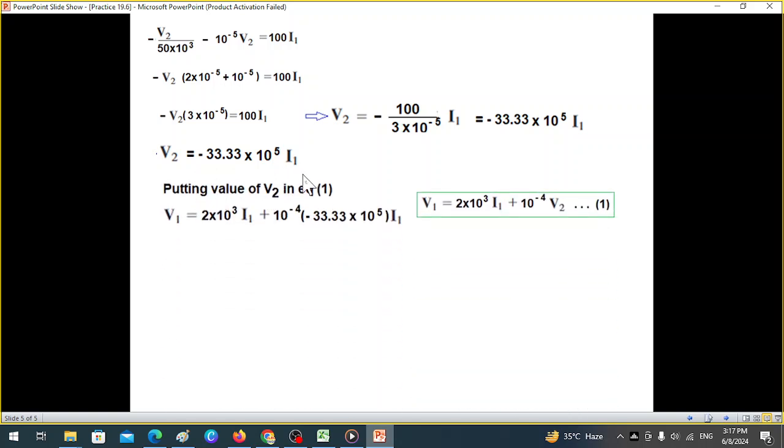Now we will plug in this value of V2 in equation number 1. If you plug in V2, we get I1 terms and V1 terms. So V1 equals 2 times 10 to the power 3 I1, 10 to the power minus 4, and for V2 we are using this value. And now we can just simplify. This is 2000, and this 10 to the power minus 4 multiplied by 10 to the power plus 5 will be 10. 10 multiplied by 33.3 will be 333.3. And subtracting,